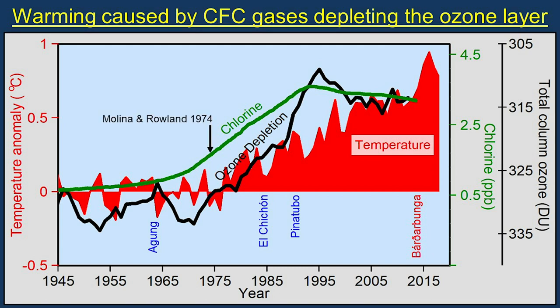In 1974, Molina and Rowland discovered that CFCs move slowly over three to five years up into the stratosphere, where they are broken down by ultraviolet radiation to release atoms of chlorine, especially in very cold environments. Under the right circumstances, one atom of chlorine can lead to the destruction of more than 100,000 molecules of ozone, creating the Achilles heel of Earth's climate.